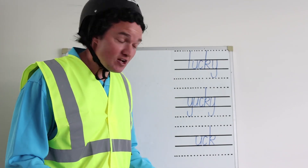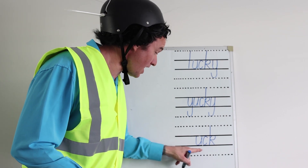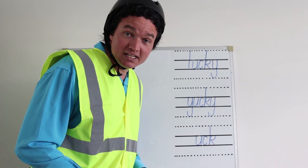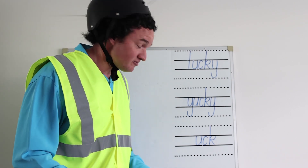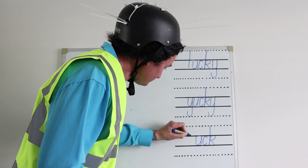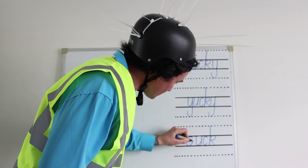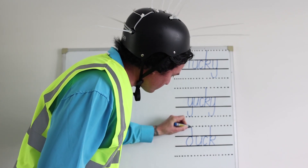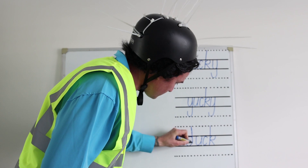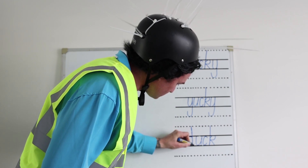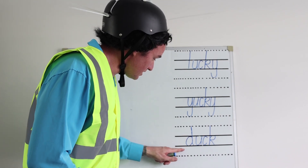What about duck, like the bird? To make the word duck, we need D before uck. Do you know which letter makes the D sound? It's the letter D. This is how we write the letter D. We start here, we curve around, back to where we started, and we keep going up. Then we follow the line right back down, and we stop here. Now we have D-uck. Duck.